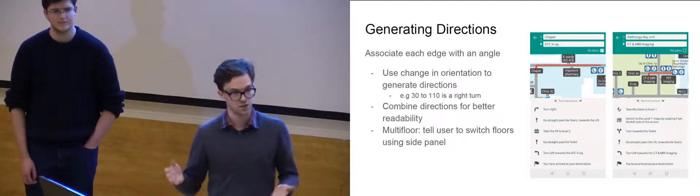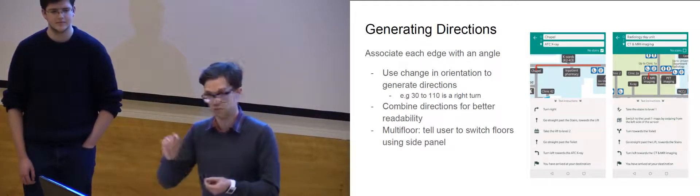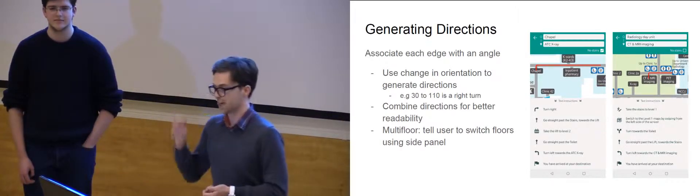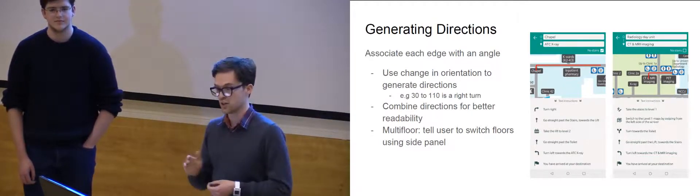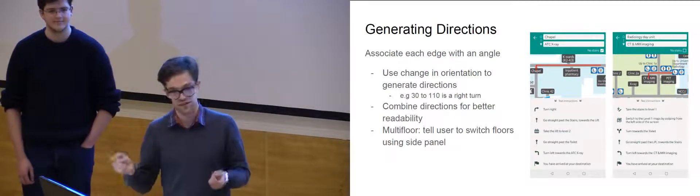Once we have these complete graphs, we can use an algorithm. We use A star to get the ideal directions as a series of vertices that we can draw. And because each edge has a certain orientation, we can actually calculate the change in angle as we follow along that path to generate text directions.